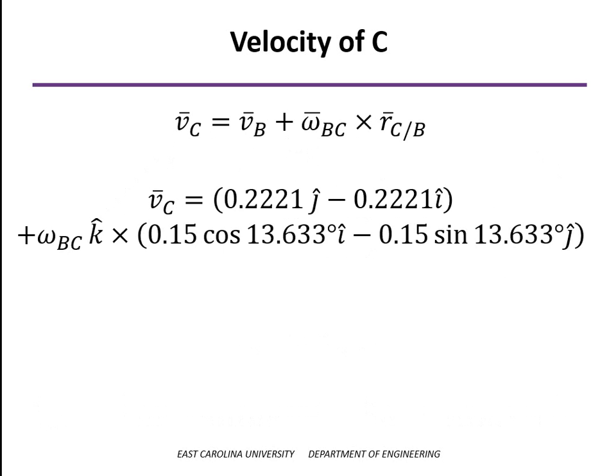Plugging in all of our known values now, we have the velocity of B which we already determined. We have omega cross R on the second line. When we do these cross products, remember k cross i is j and k cross j is i.